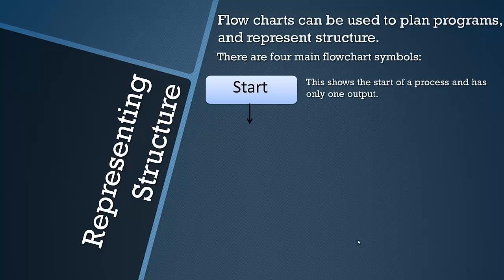So the first one is start. This is obviously the first one in your flowchart and the flowchart can be a single process or a whole program depending on the level which you want to complete it. This block only has one output and no input obviously, it's the first block.